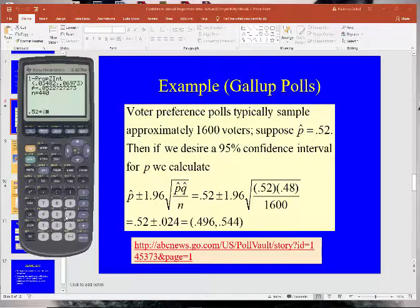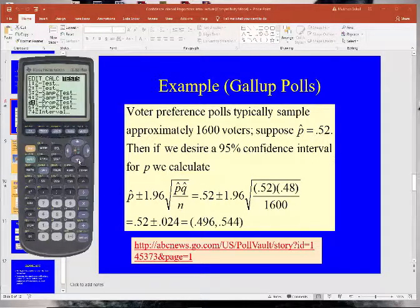So it looked like 832 said that they had support this policy. So stat, tests, one prop z interval, that was 832, 1600 total people.